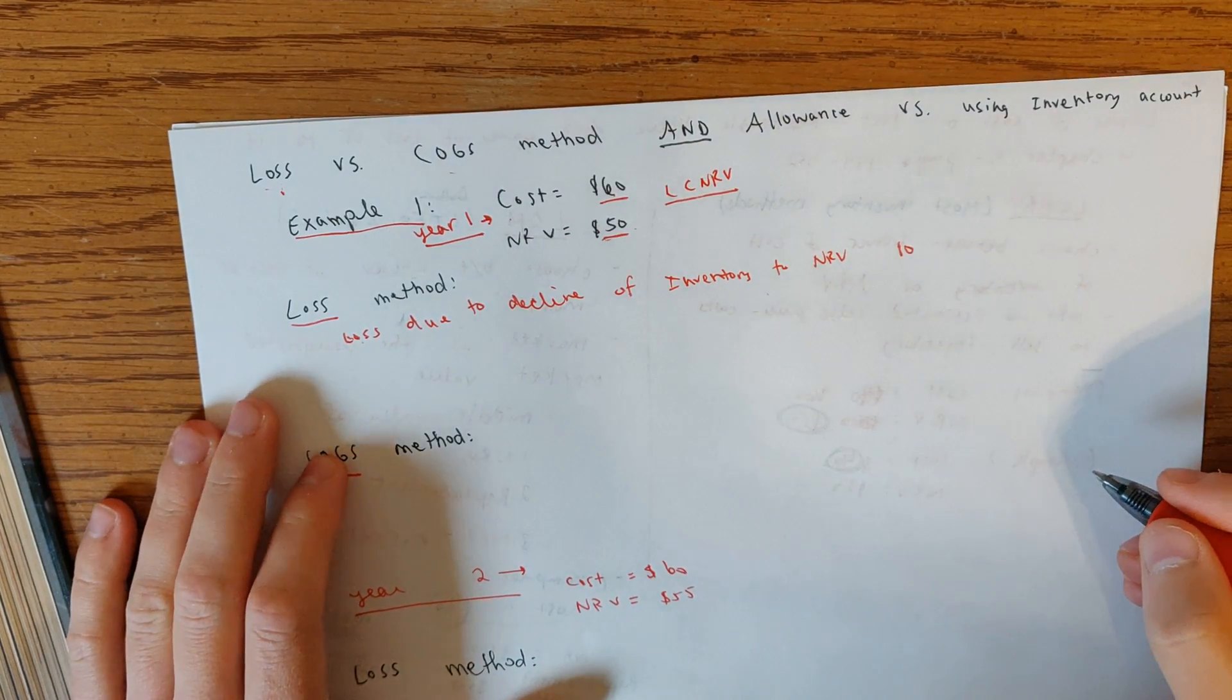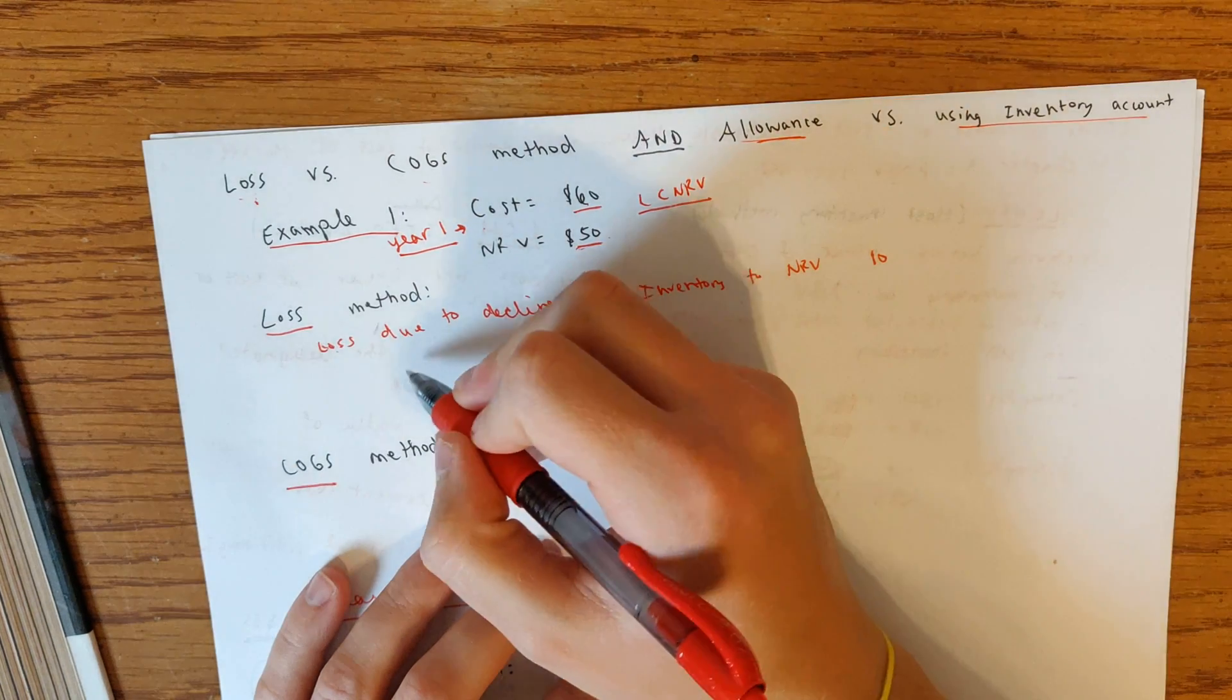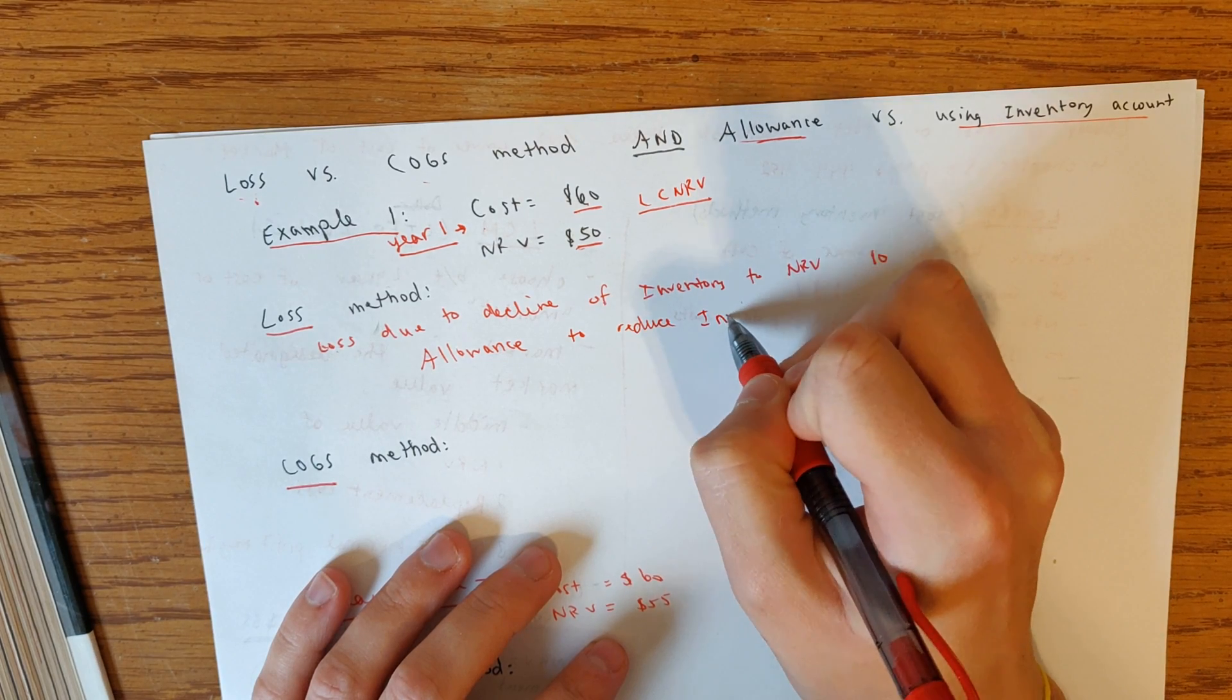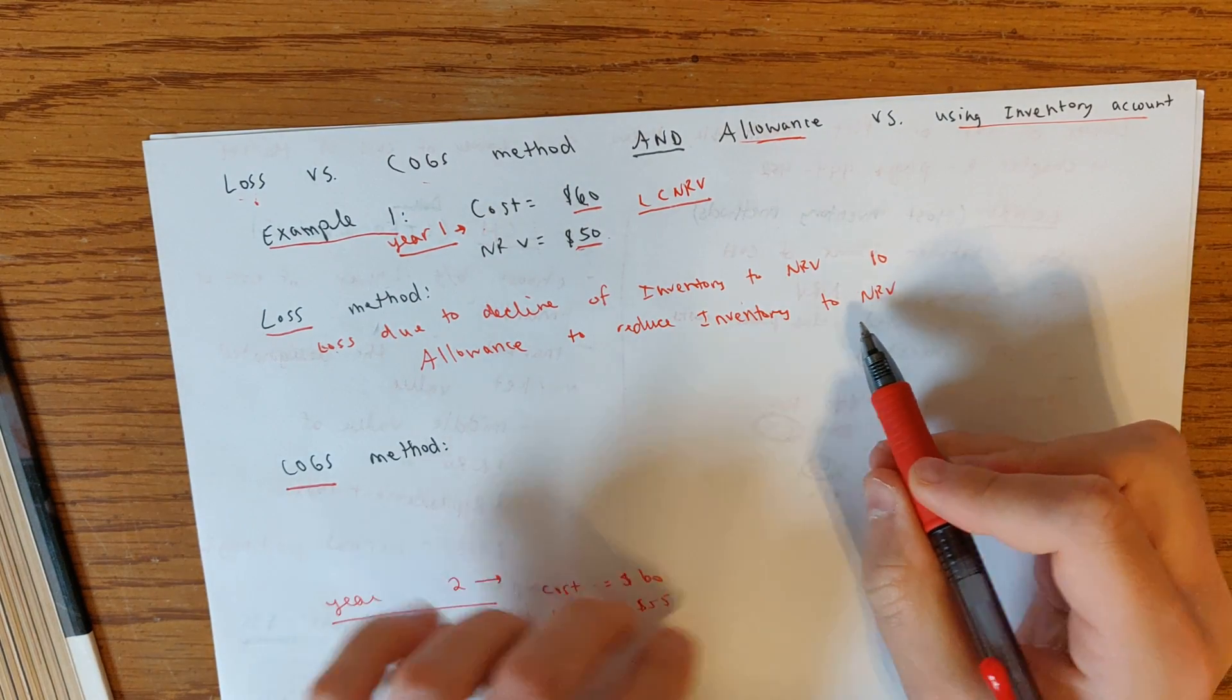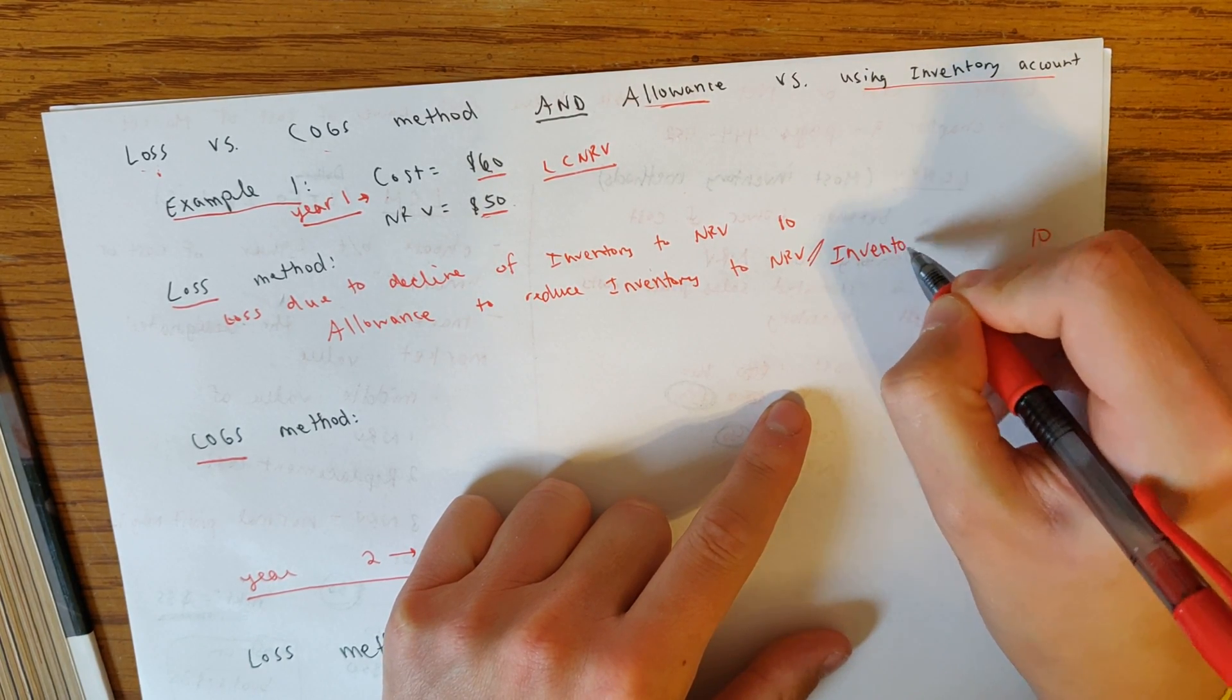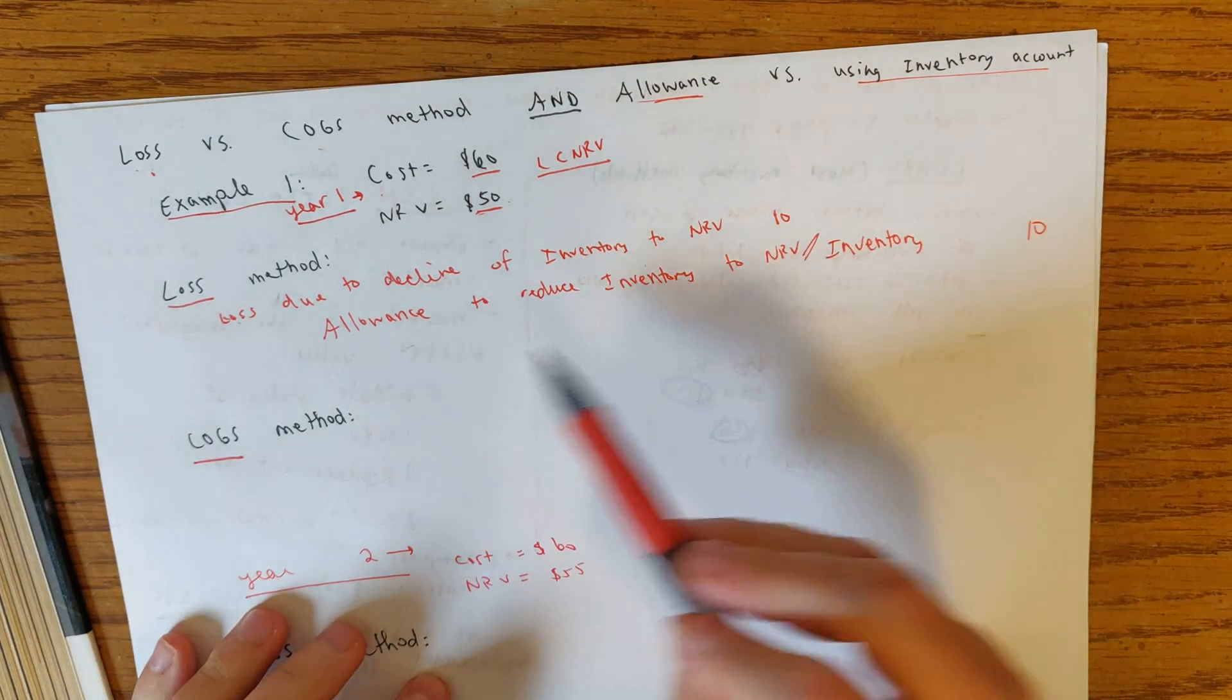Now the credit is also going to be specified. Now the credit is where we have allowance or the inventory account. And so let's say that they said to use the allowance method. If they said to use the allowance method, then you would have allowance to reduce inventory to NRV. You would have that for 10. I wrote it off to the side because I'm going to put a slash there. If they tell you to write it down directly to the inventory account and they say, do not use an allowance account, then you would just credit inventory. So that's how that works.